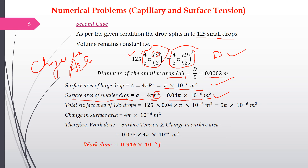Since there are 125 smaller drops, the total surface area of all 125 drops is 125 times the area of one smaller drop, which equals 5π × 10⁻⁶ m². The change in surface area is therefore 5π × 10⁻⁶ minus π × 10⁻⁶, giving ΔA = 4π × 10⁻⁶ m².